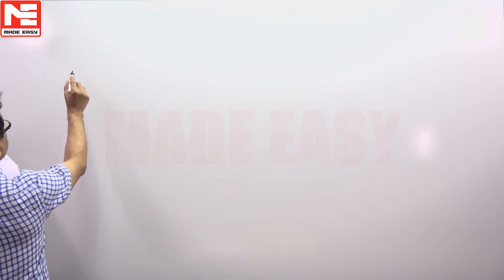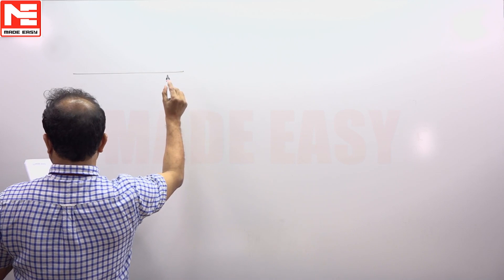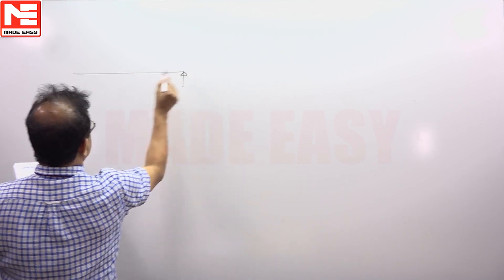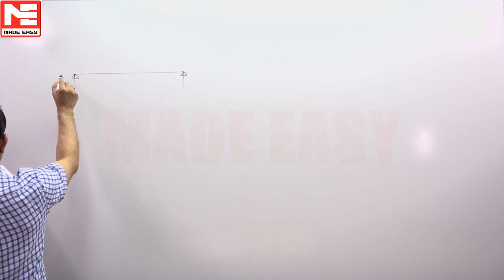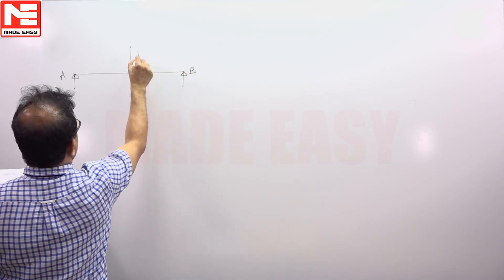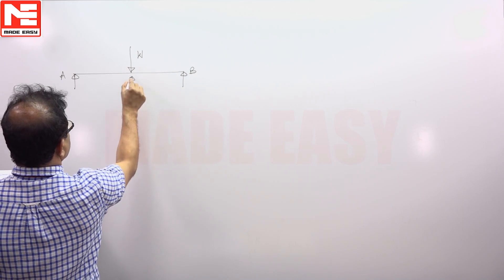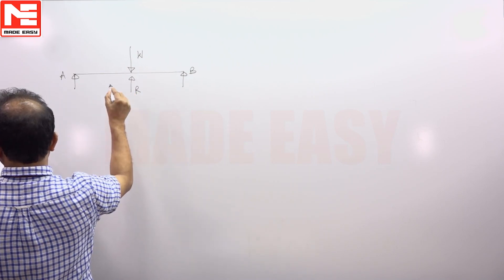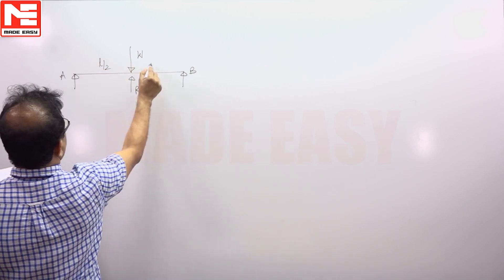So if you take the compatibility condition, this is a beam let us say AB, there is a central load W and from here there will develop a reaction R from the bottom beam L by 2, L by 2.